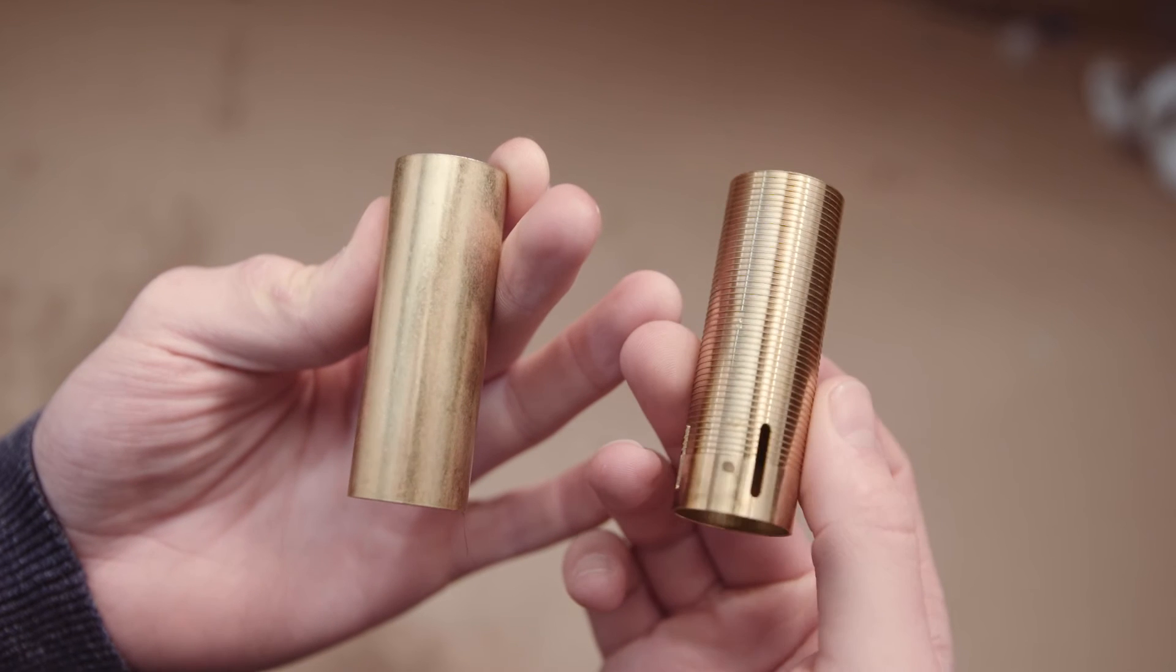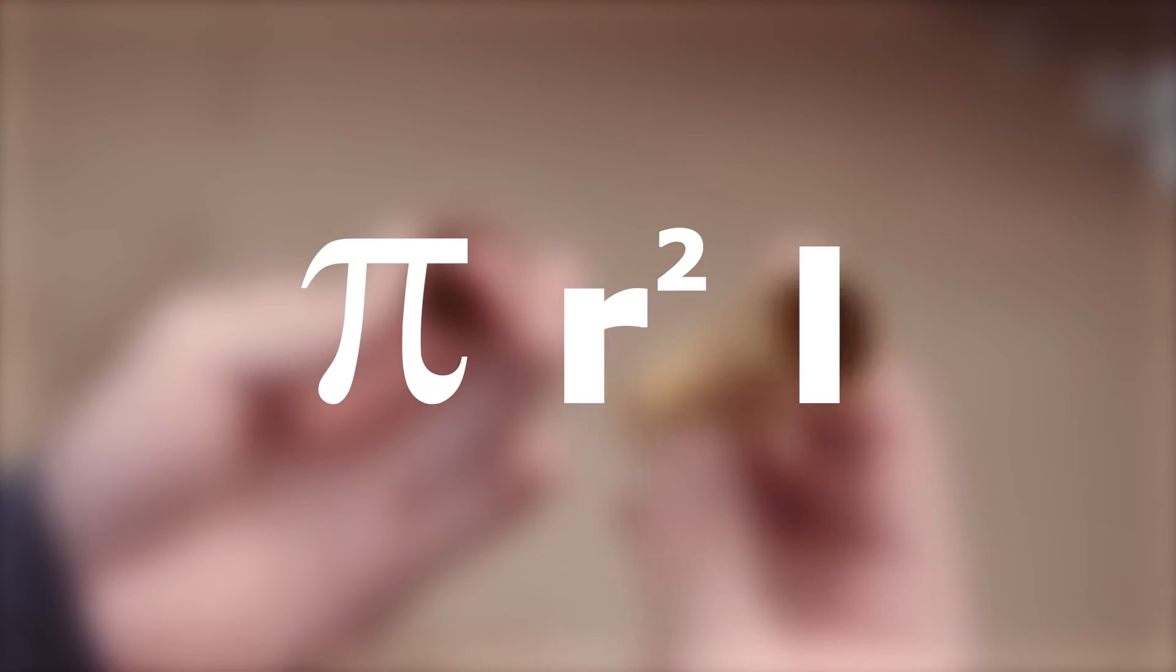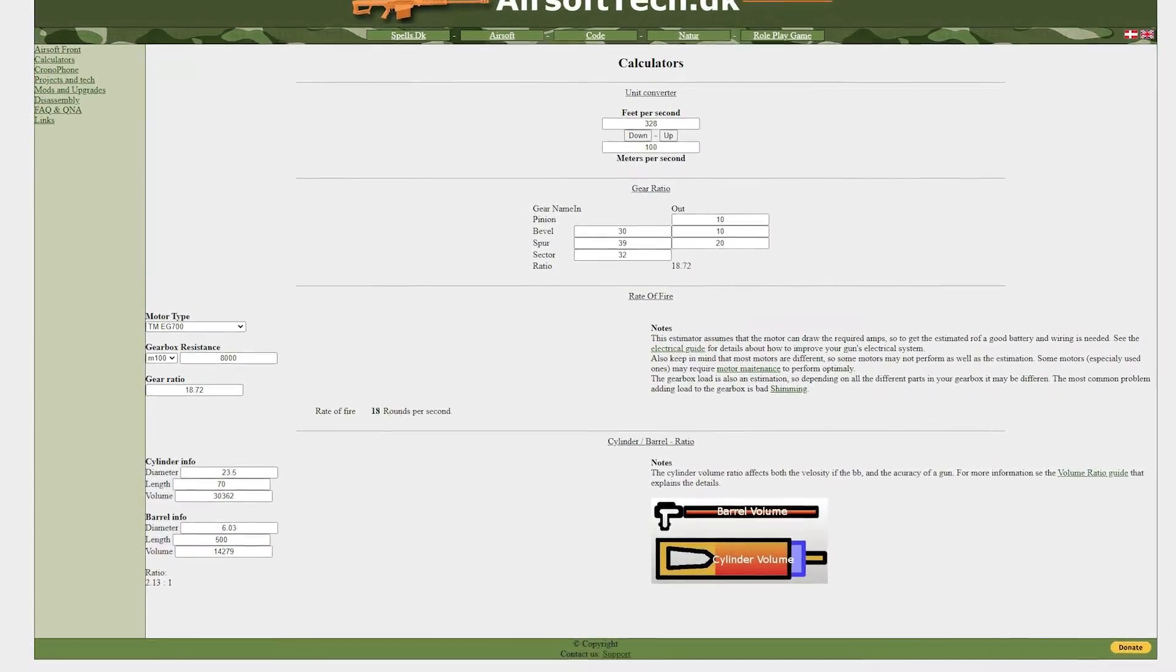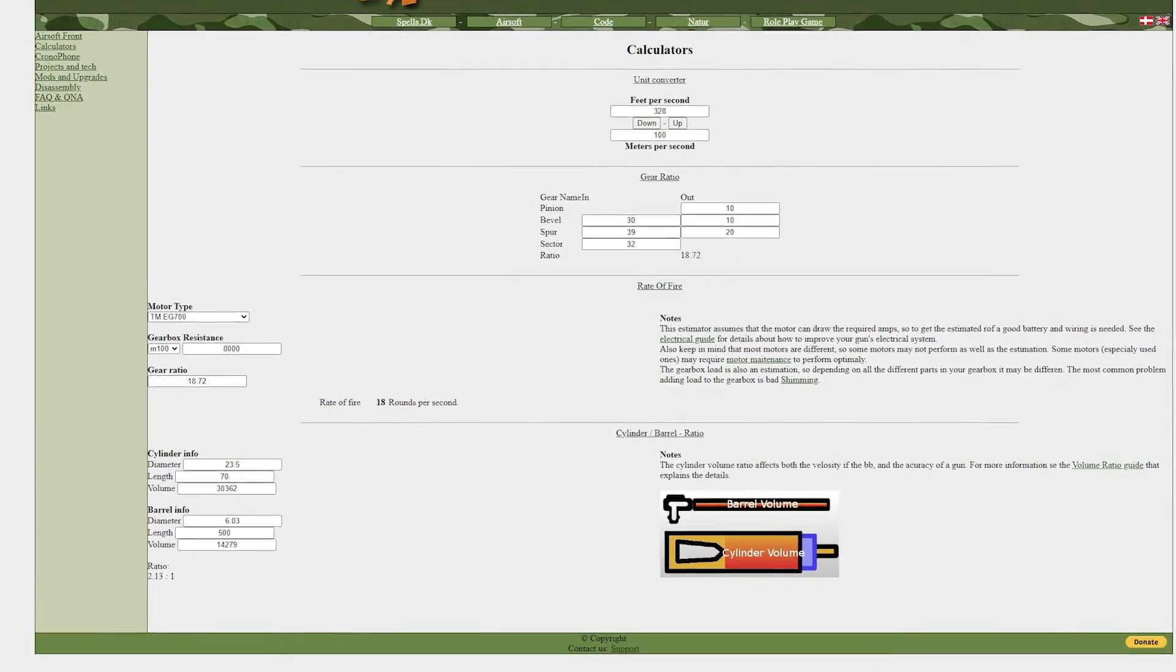To calculate the volume of these, you can use pi times r squared times length, or you can use a calculator online to make it easier. This website has a calculator where you can just put the value straight in, and it will give you the ratio difference.